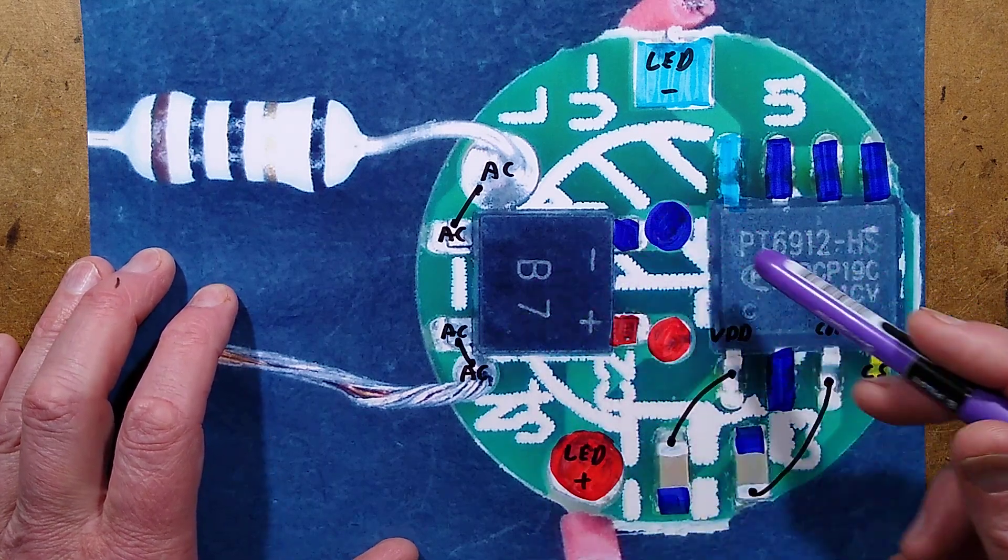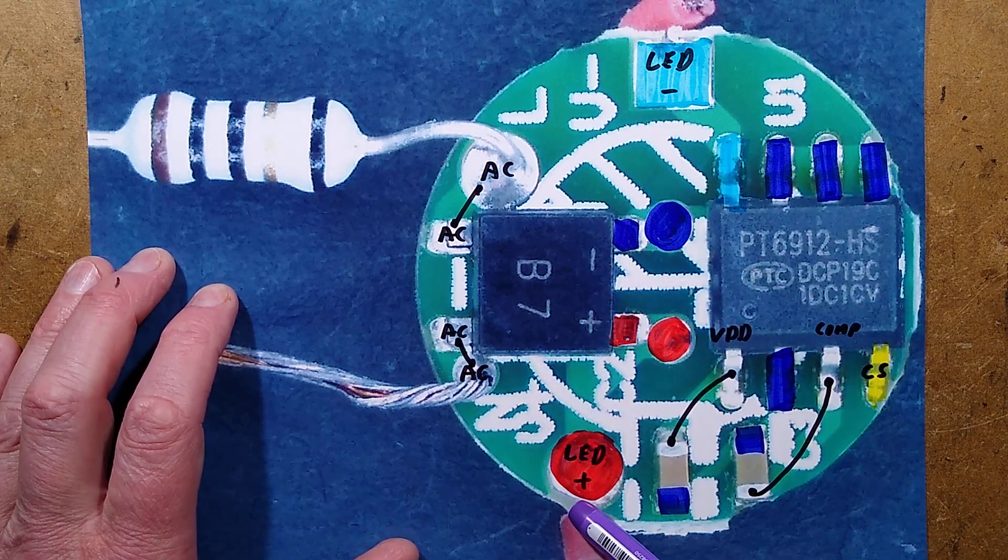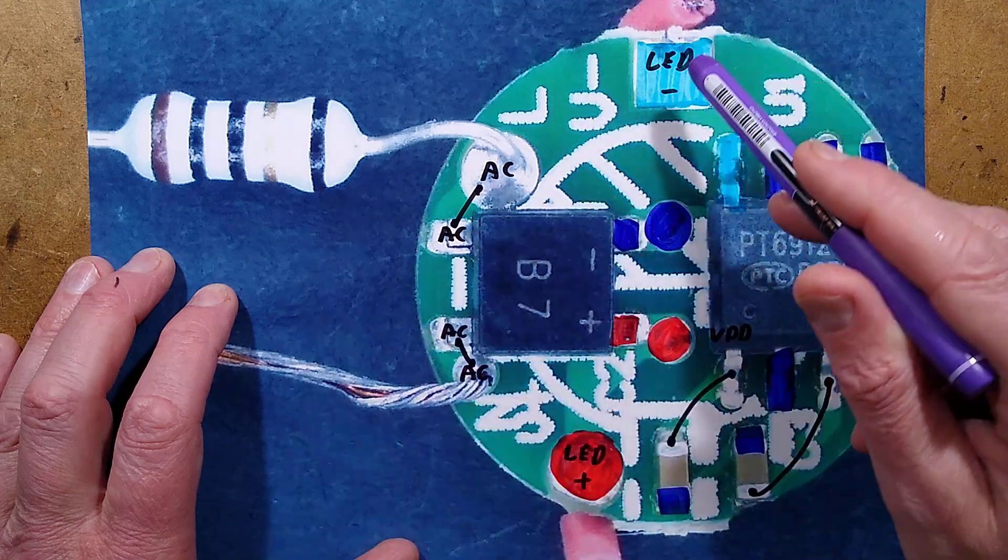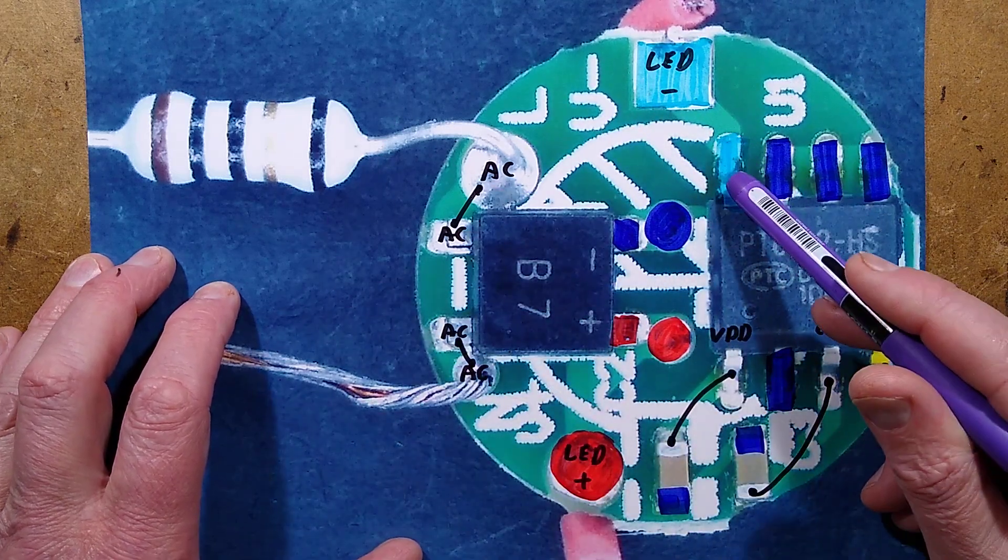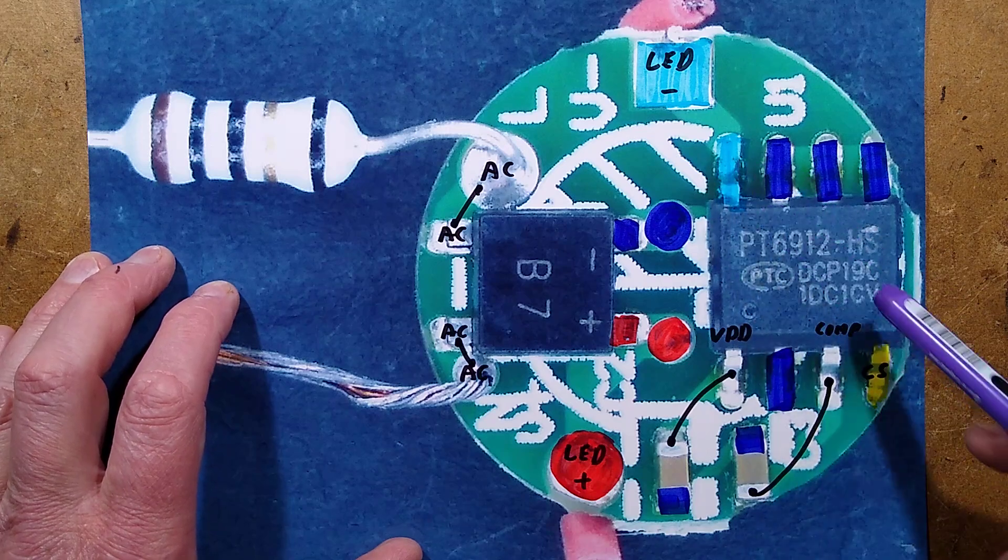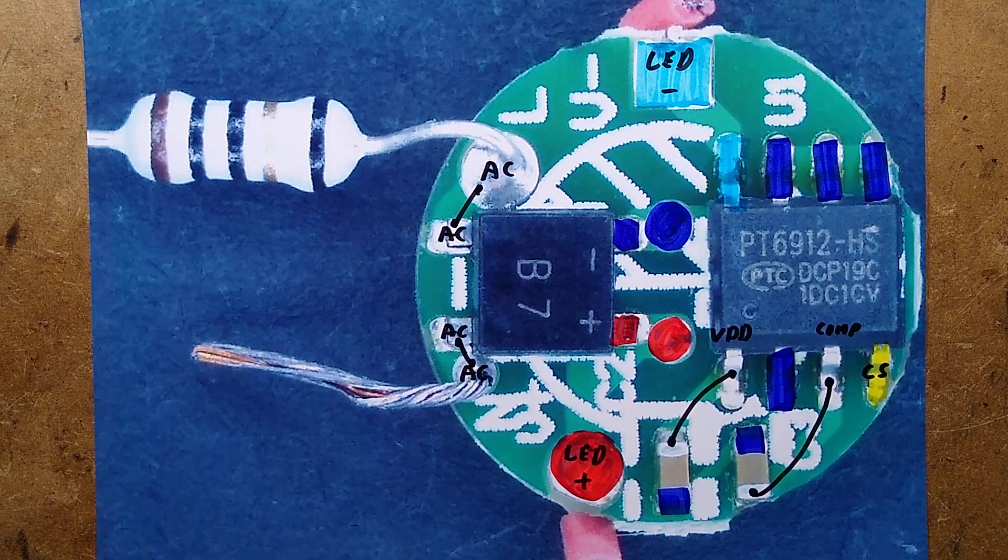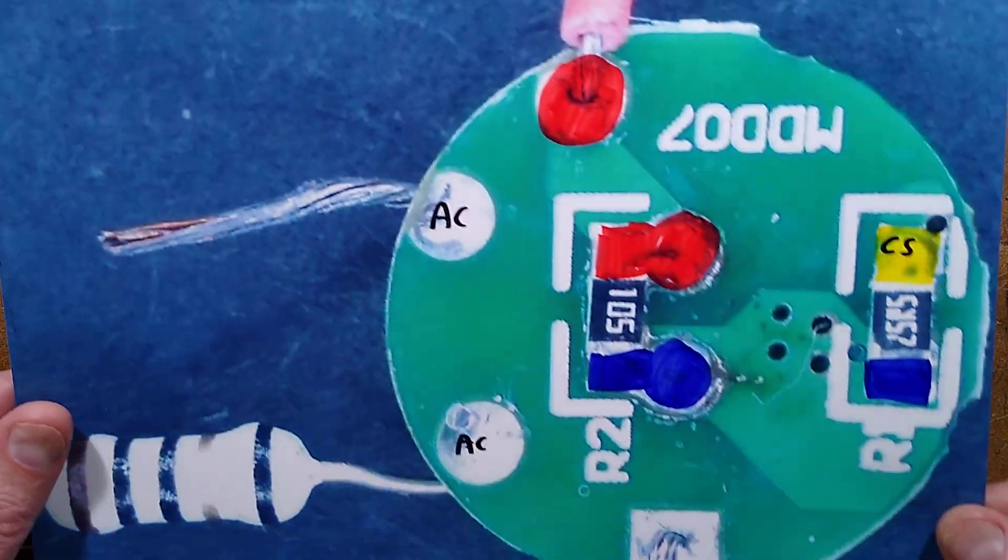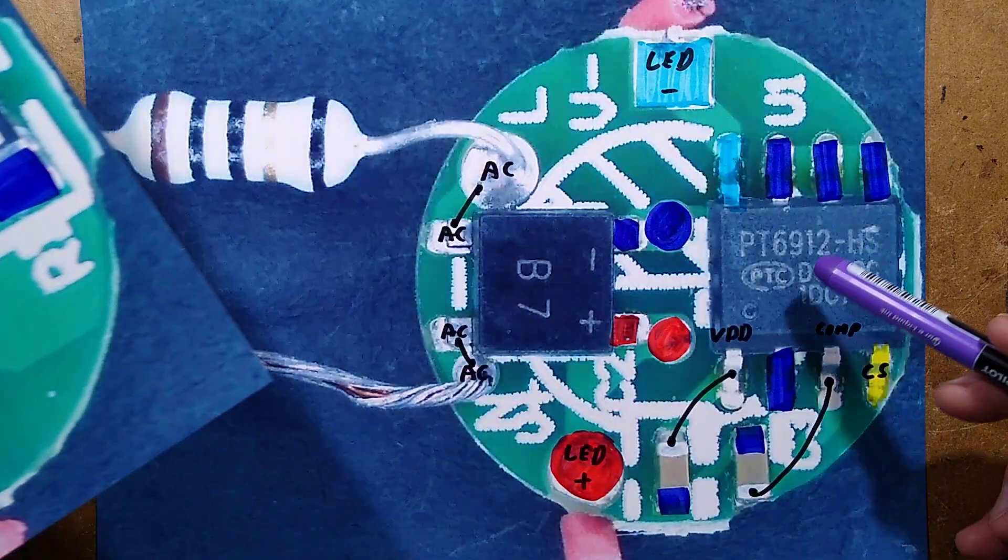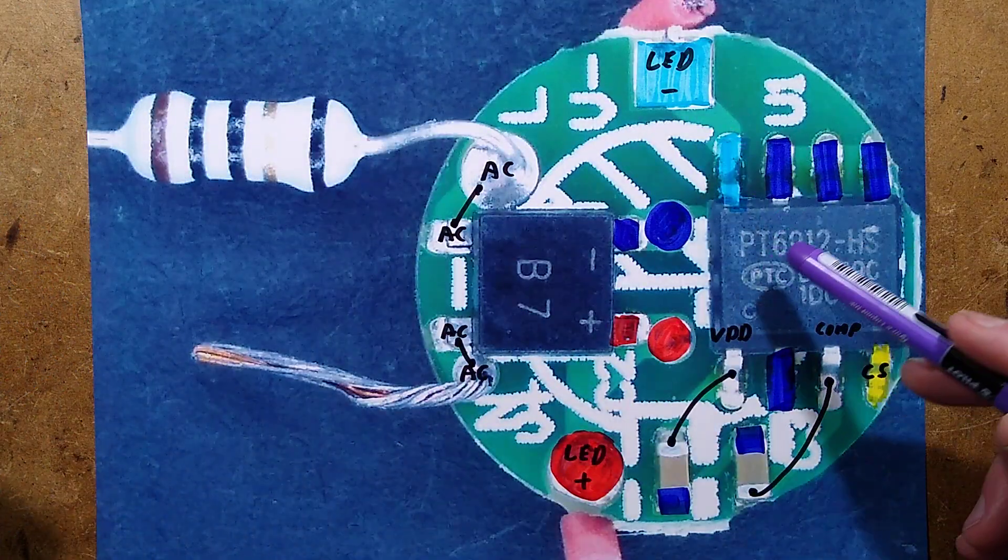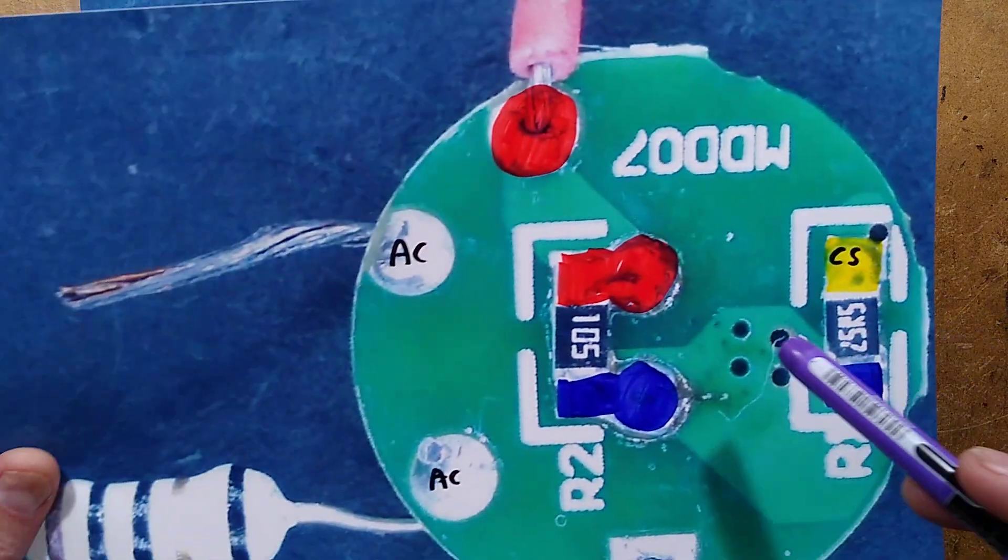It powers the positive, goes to power the LEDs directly, comes goes through the LEDs, comes back to here, goes to the input pin of the chip. And then it gets monitored by a current sense resistor on the other side, 25.5 ohm. And then that sets the amount of current this chip is going to allow to flow through it.